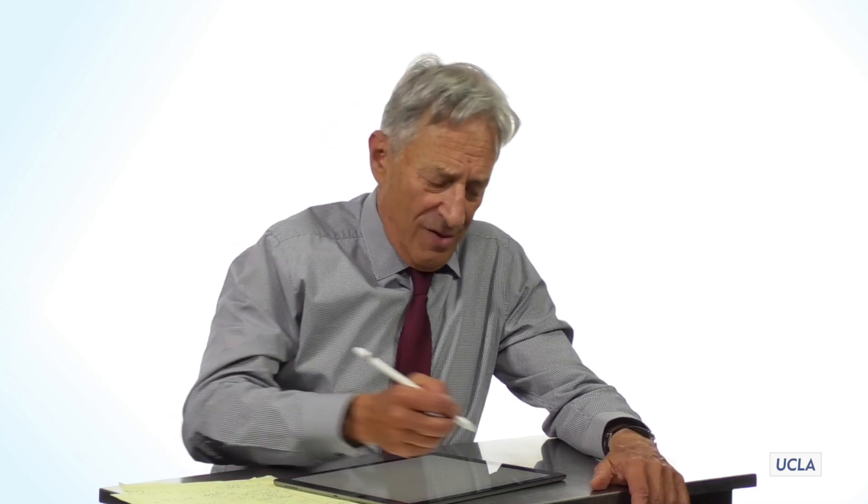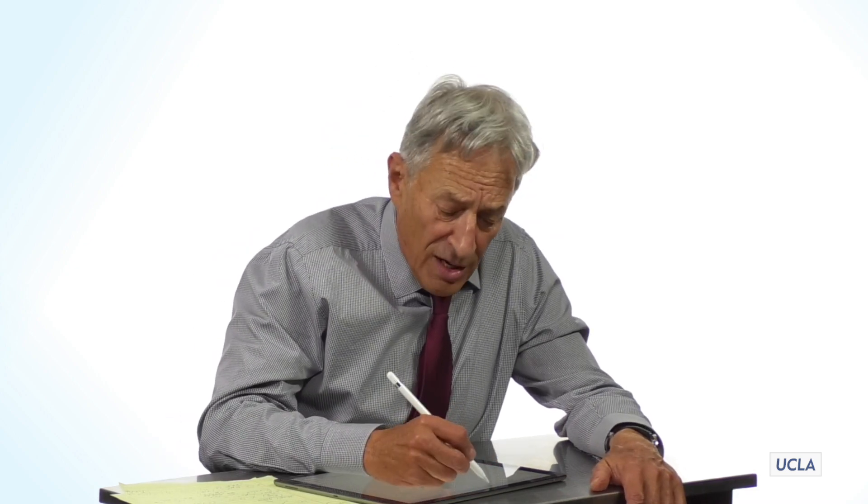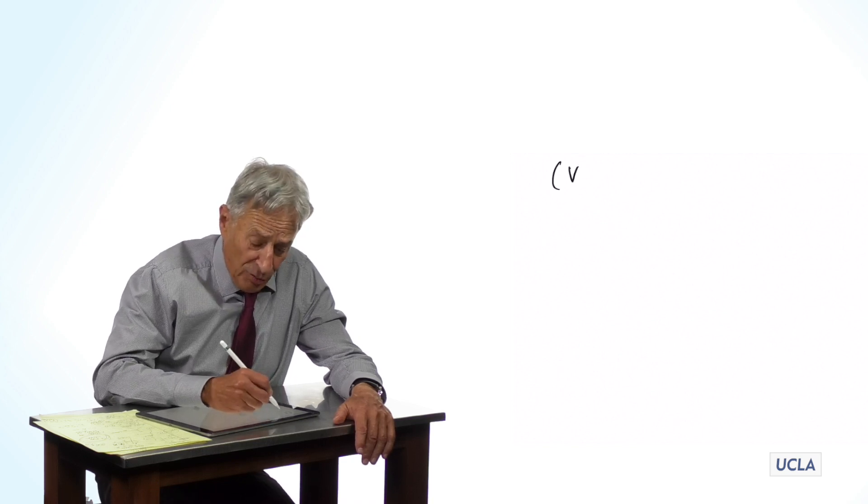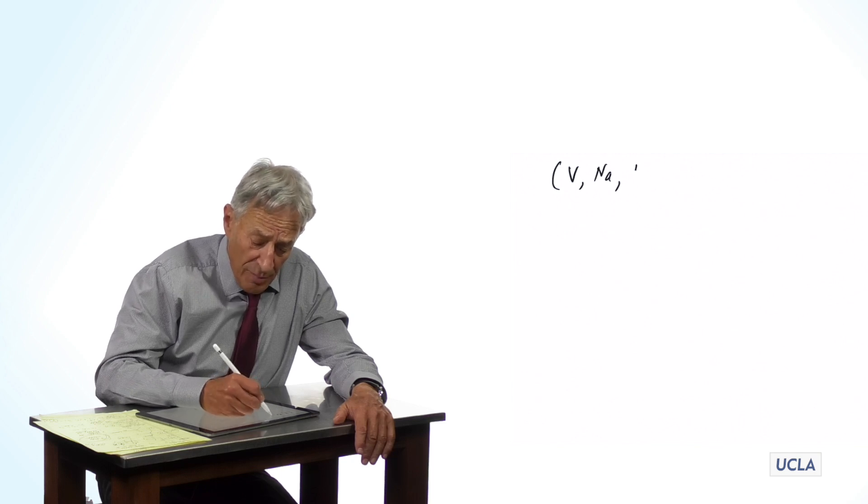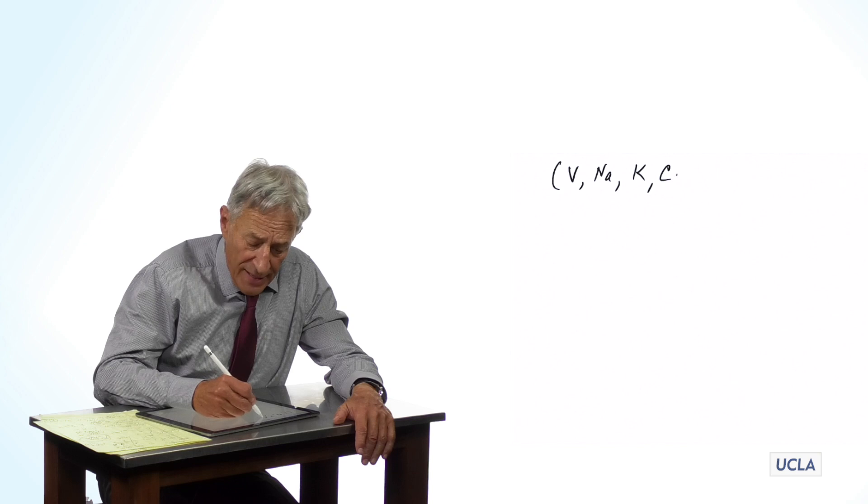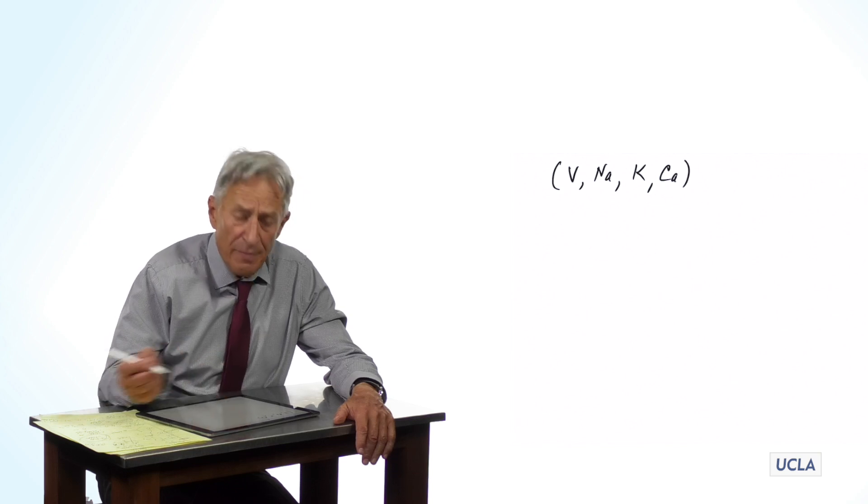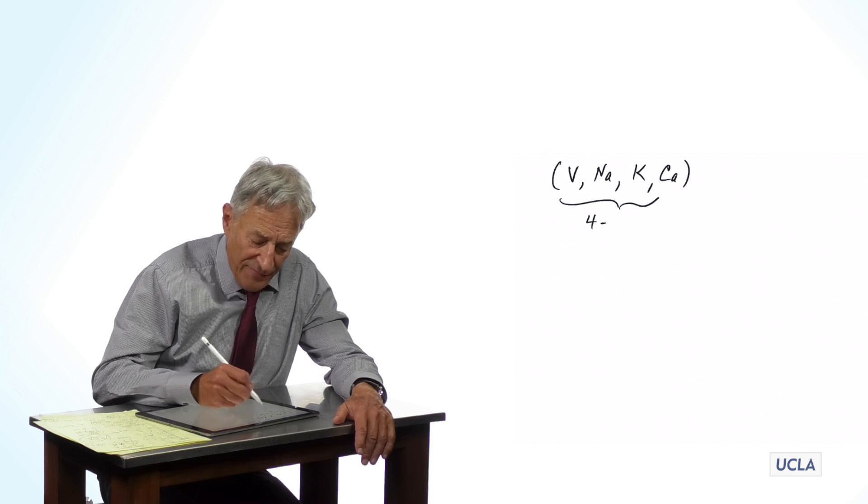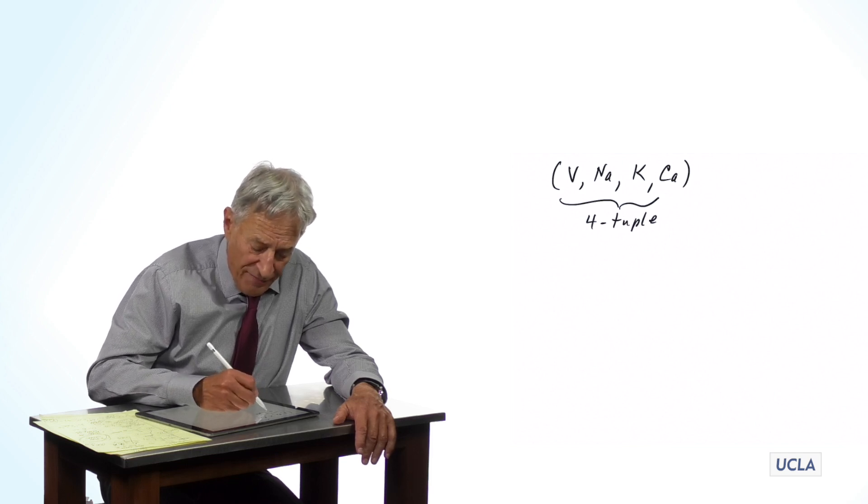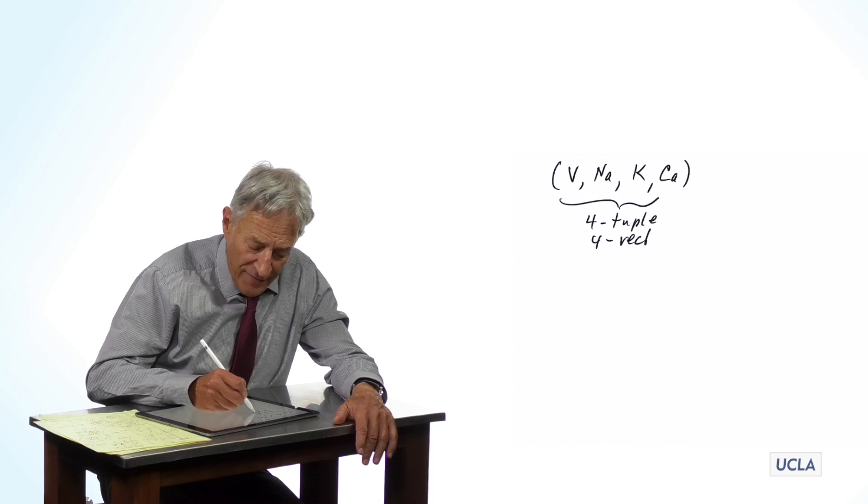Do we have to stop there? What about four variables? When you study the neuron, you will learn that the neuron is characterized by a voltage, by a sodium concentration, by a potassium concentration, and by a calcium concentration. So the neuron is represented, the state of the neuron at a time, is represented by a four-tuple or a four-vector.